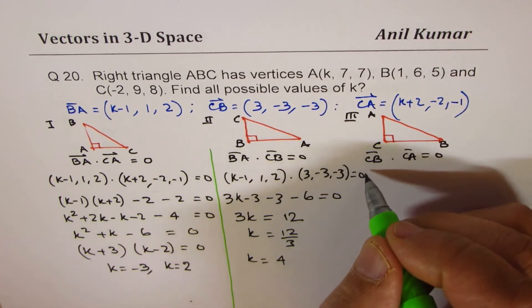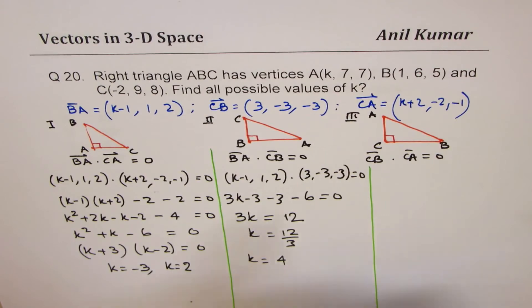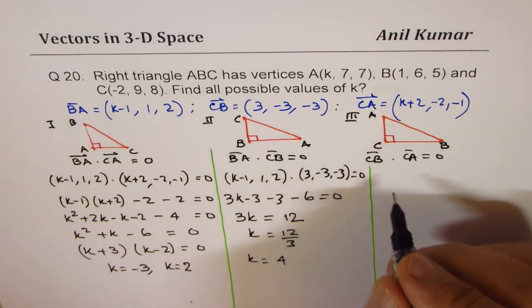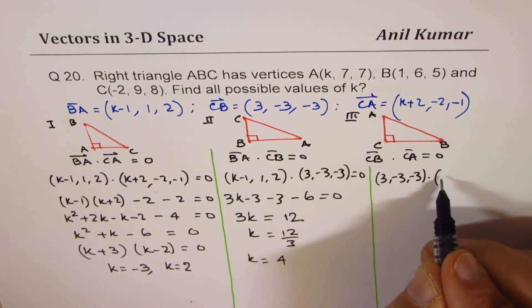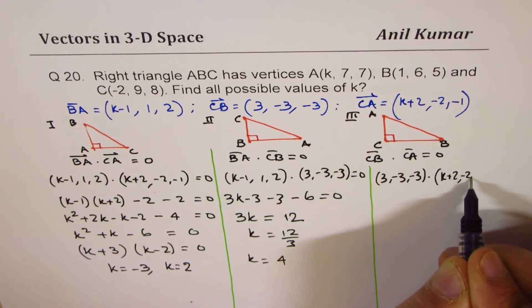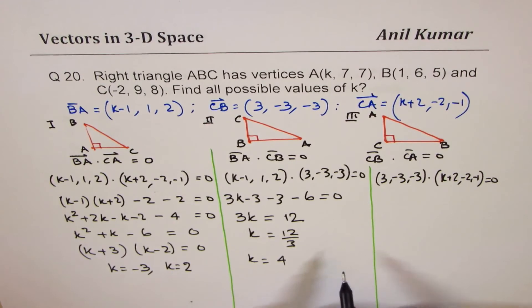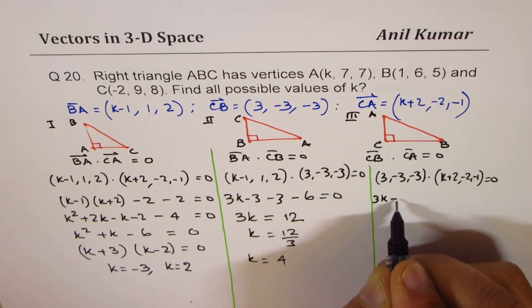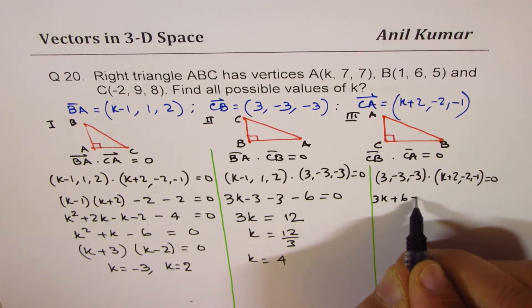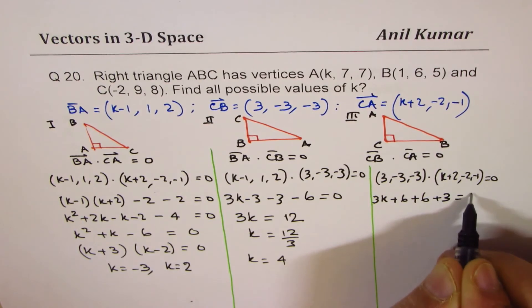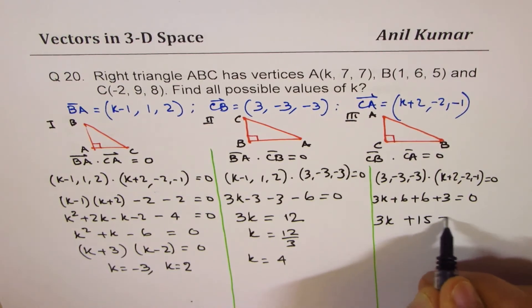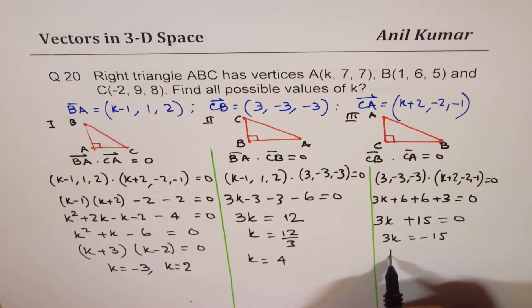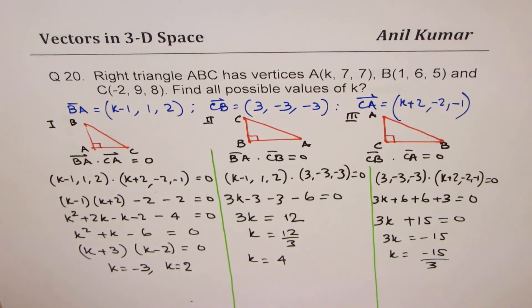Okay, so let's move on and do the third case, which is CB dot CA: (3, −3, −3) dot (K+2, −2, −1) equals to 0. So let's multiply. So 3 times K+2 is 3K+6, minus 3 times minus 2 makes it plus 6, minus 3 times minus 1 makes it plus 3 equals to 0. So we have 3K plus 15 equals to 0, 3K equals to minus 15 or K equals to minus 15 by 3. So we get K equals to minus 5.